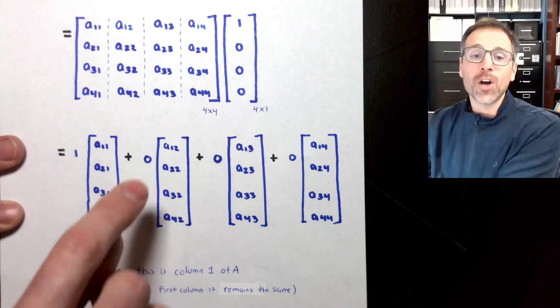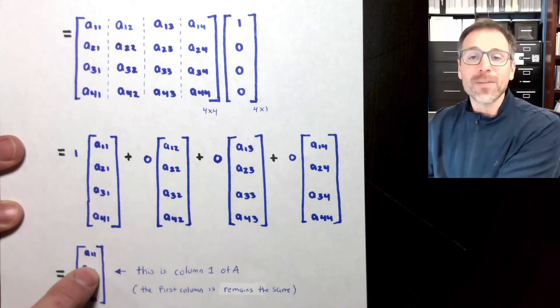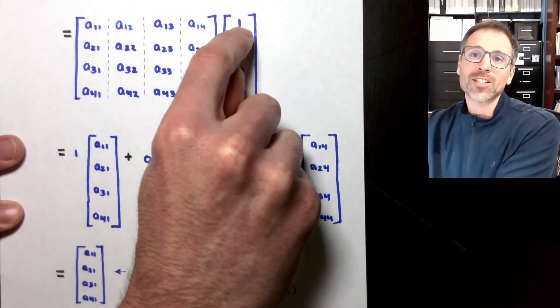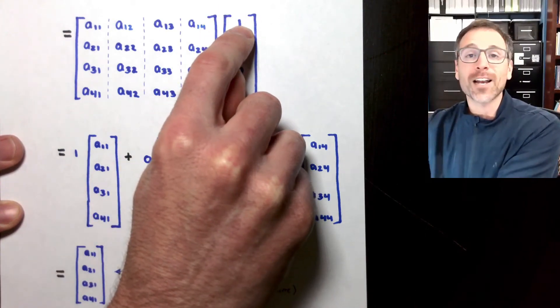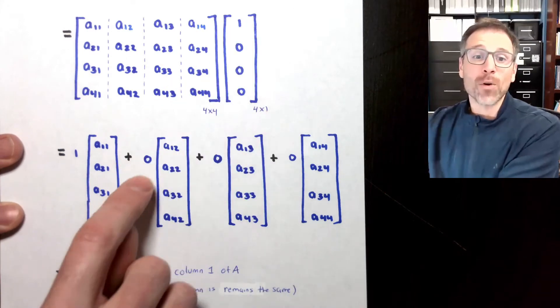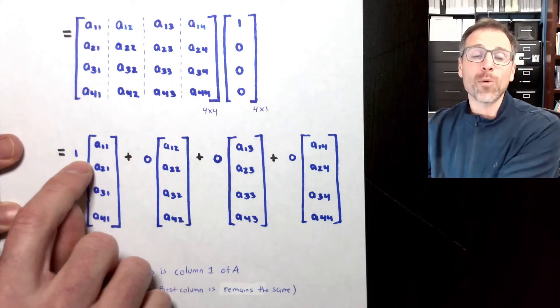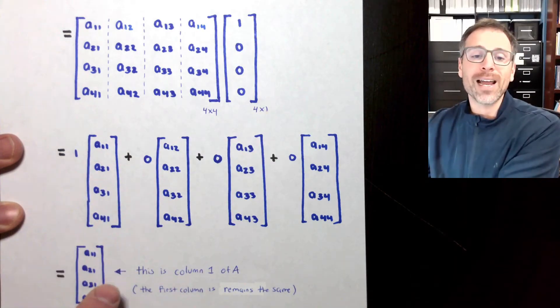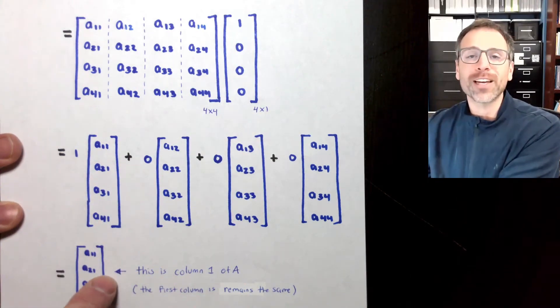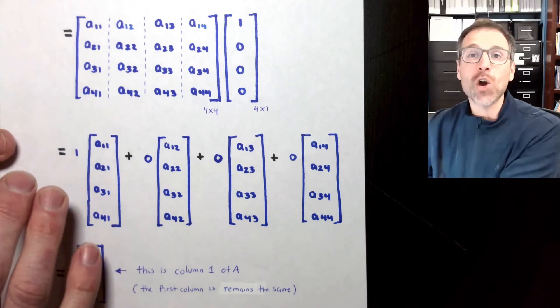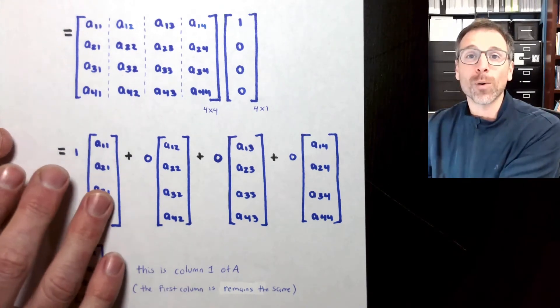One thing to note: the reason this is identical has to do with the fact that this is a one and not a two. One is a very special number — it's the only number we can multiply by and not change anything. It's the multiplicative identity. That's something to keep in mind as we move forward.